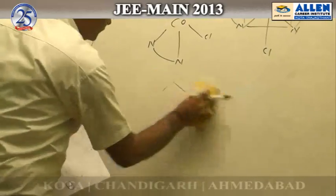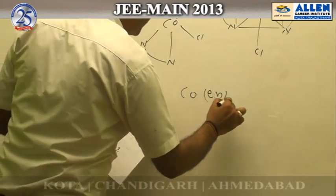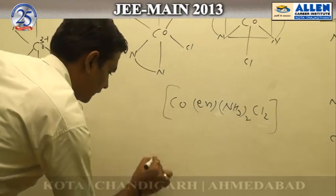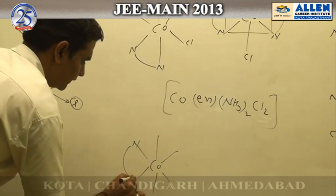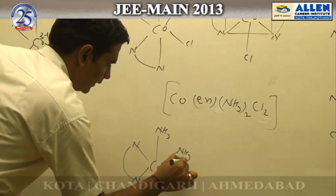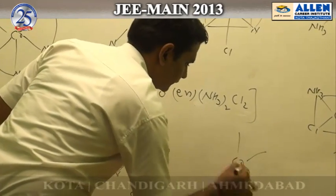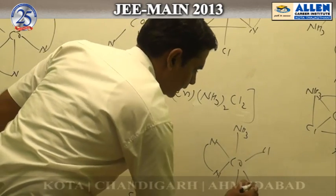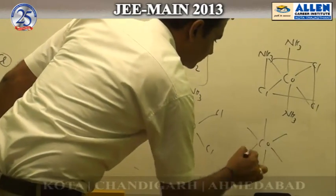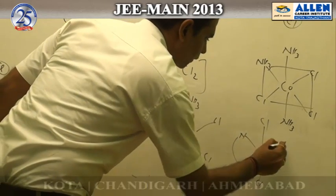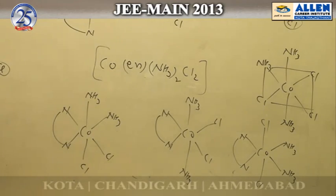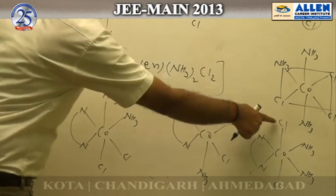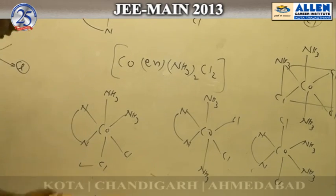Option D exists in two geometrical isomeric forms: cis and trans. Actually this complex exists in three geometrical isomeric forms — one cis and two trans forms: one trans with respect to ammonia and one trans with respect to chlorine.